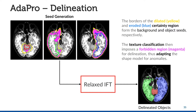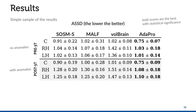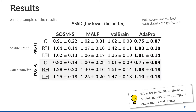Finally, we used these seeds for object delineation by the relaxed image forest transform, obtaining the delineated objects. For experiments, we considered six in-house datasets of 3D MR T1 images of healthy subjects and patients with epilepsy. We focused on the segmentation of the cerebellum and right and left hemispheres. As baselines, we considered three state-of-the-art atlas-based methods, and we used the Dice and ASSD as metrics. Adapro obtained the best ASSD scores (lower is better) for all objects from healthy subjects and epilepsy patients, and considerably better results for all objects for images with anomalies.